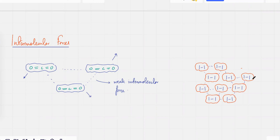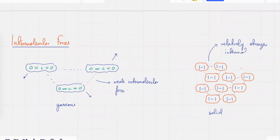Carbon dioxide is gaseous. Iodine has relatively stronger intermolecular forces, so it's solid. Remember, the strengths of intermolecular forces are not always the same — they vary from molecule to molecule.